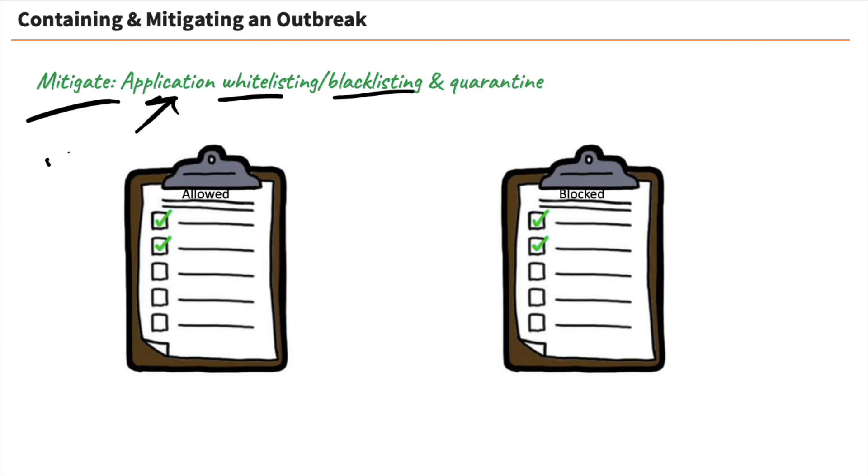Well, a whitelist, which is this first clipboard here, is a set of rules within a security appliance or a security product that defines what is allowed. So we're saying this is allowed to happen or to go through the appliance. These sites are allowed to be visited. This type of file is allowed to come through into our network. But if we use blacklisting, which is over here, it's going to go by a list of what is denied.